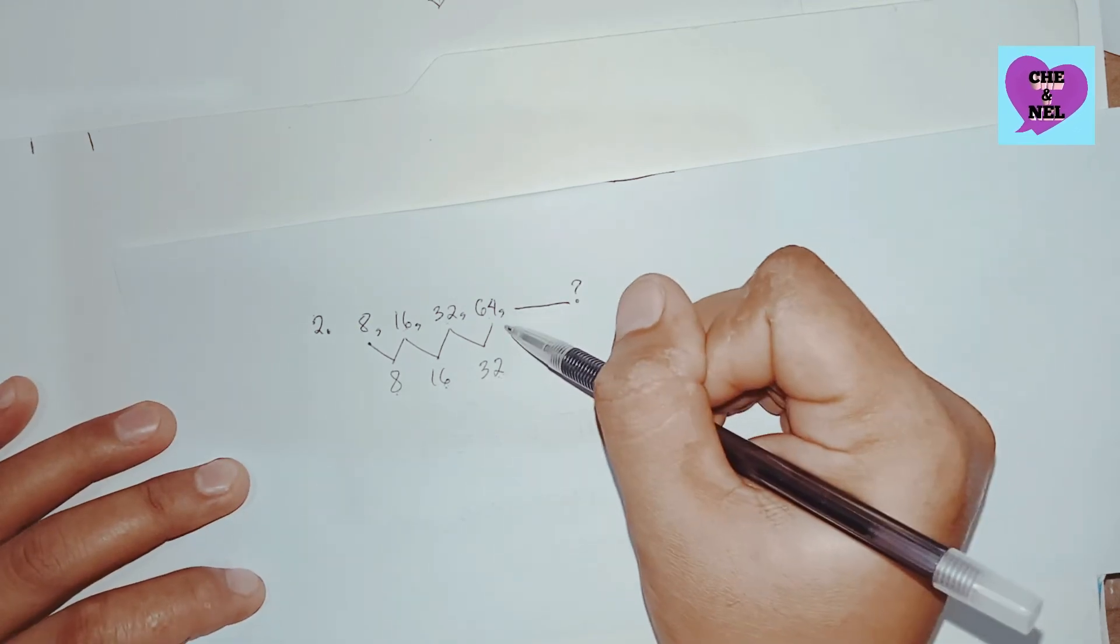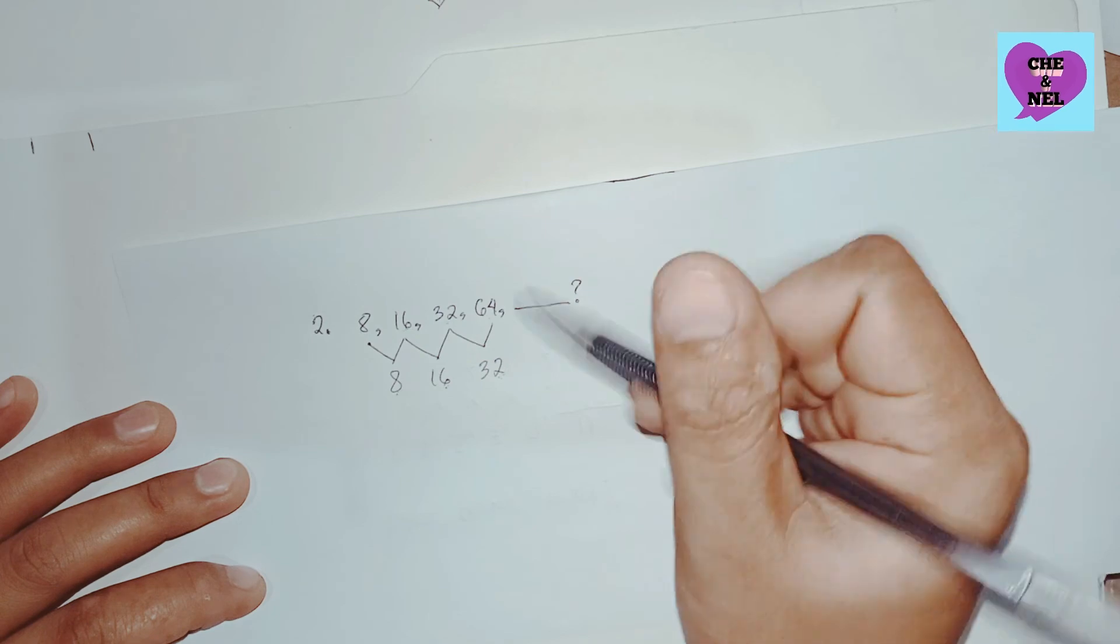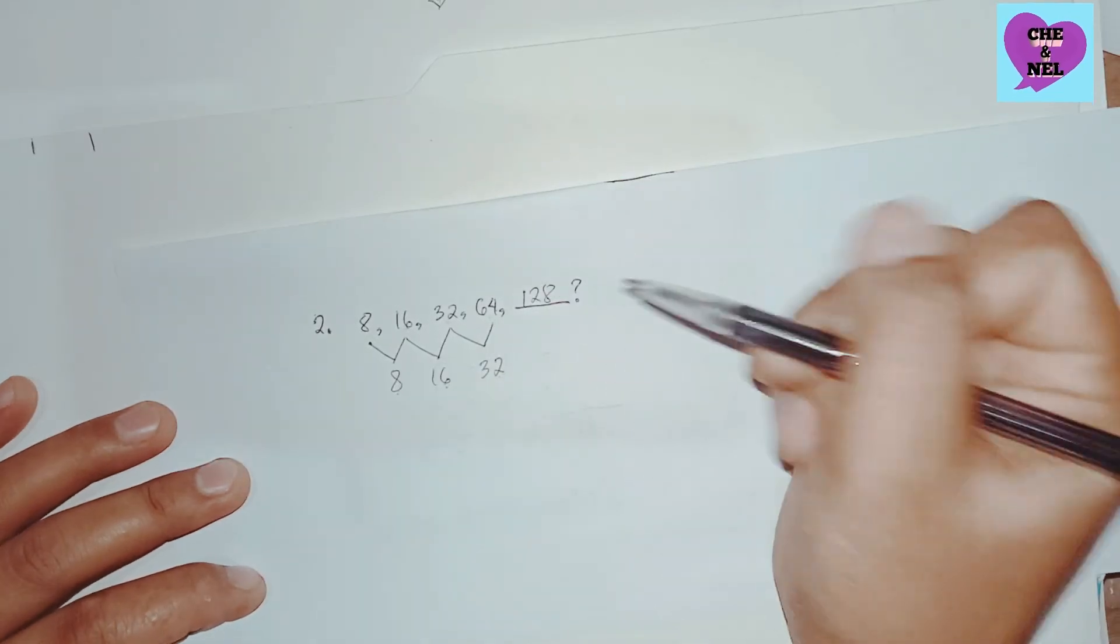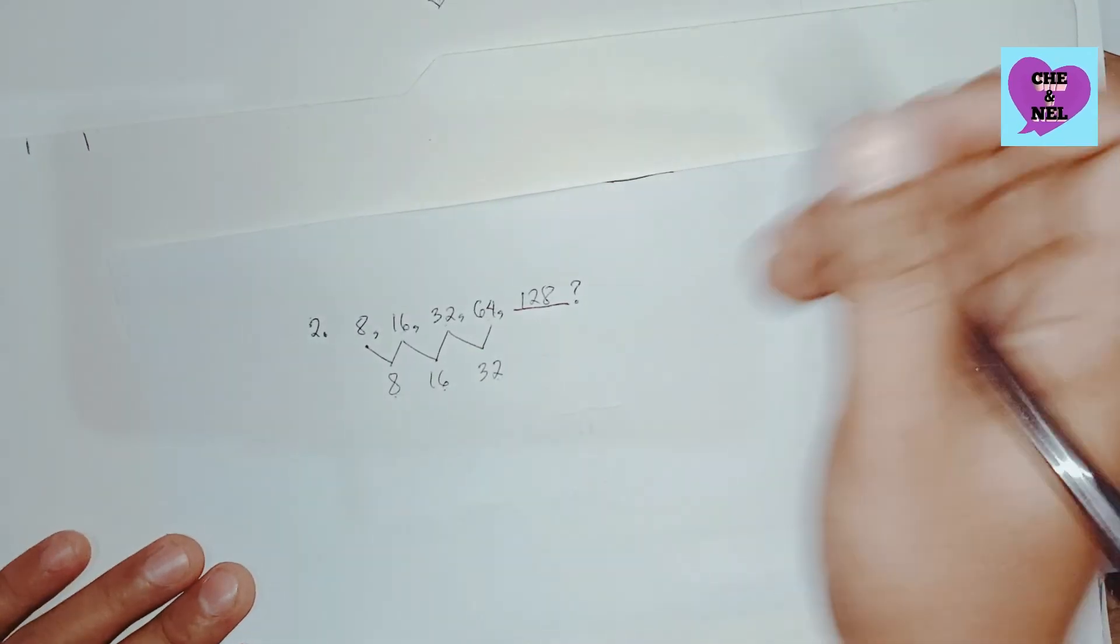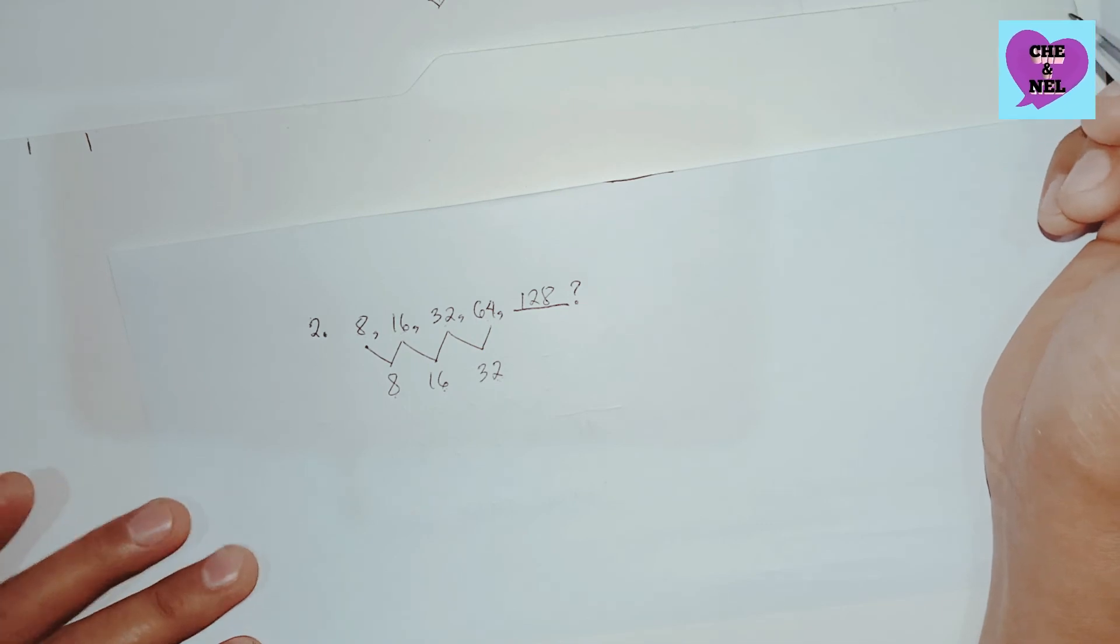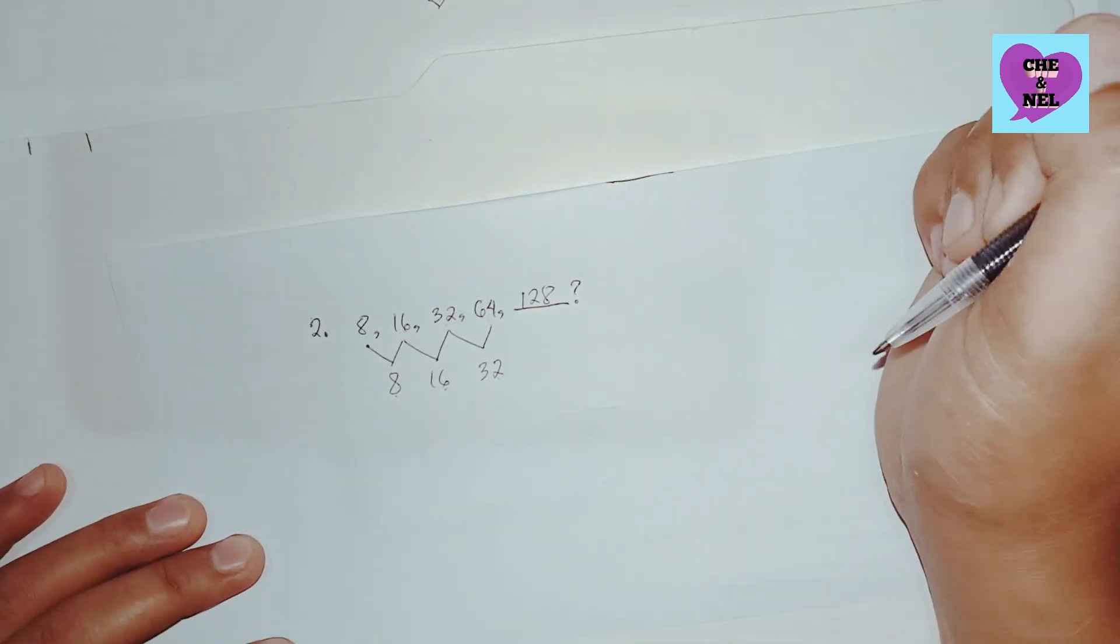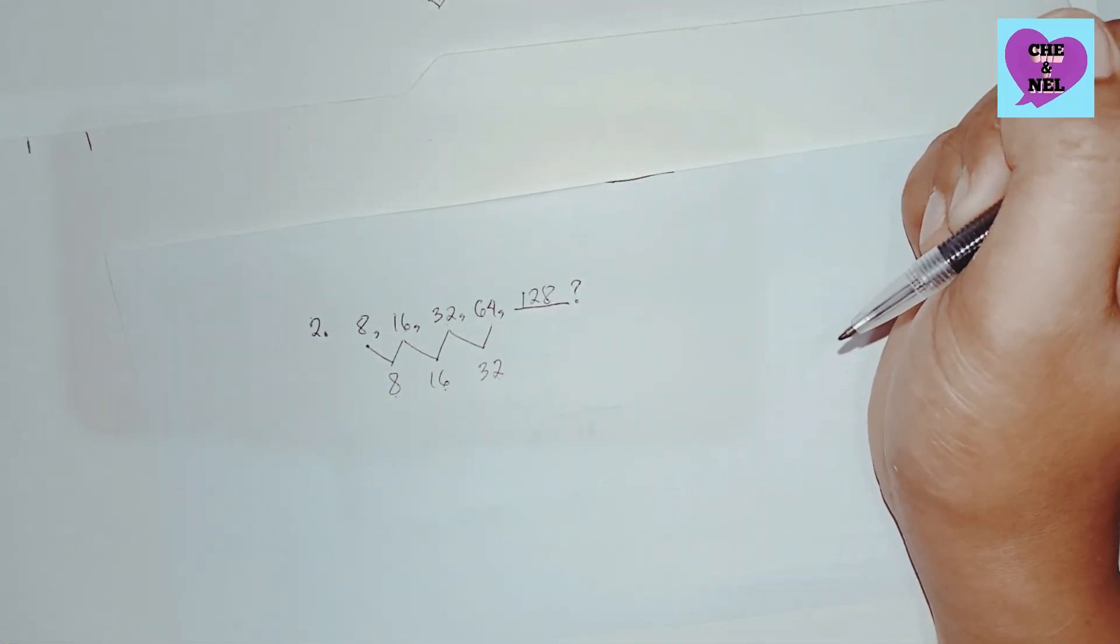That means 64 times 2 equals 128. So that answer is our blank: 128. I think that's clear for this video.